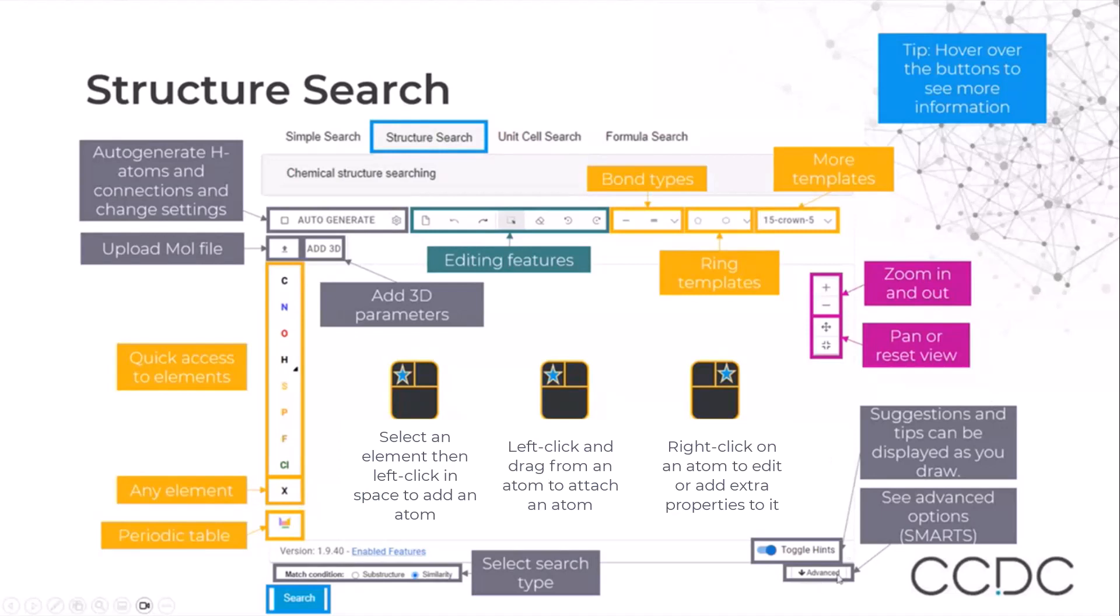You can also access advanced options. You will also notice as you sketch that you will have suggestions popping up, and you can toggle on and off these hints. You can also change the search type from substructure and similarity, and when you're ready, click search.